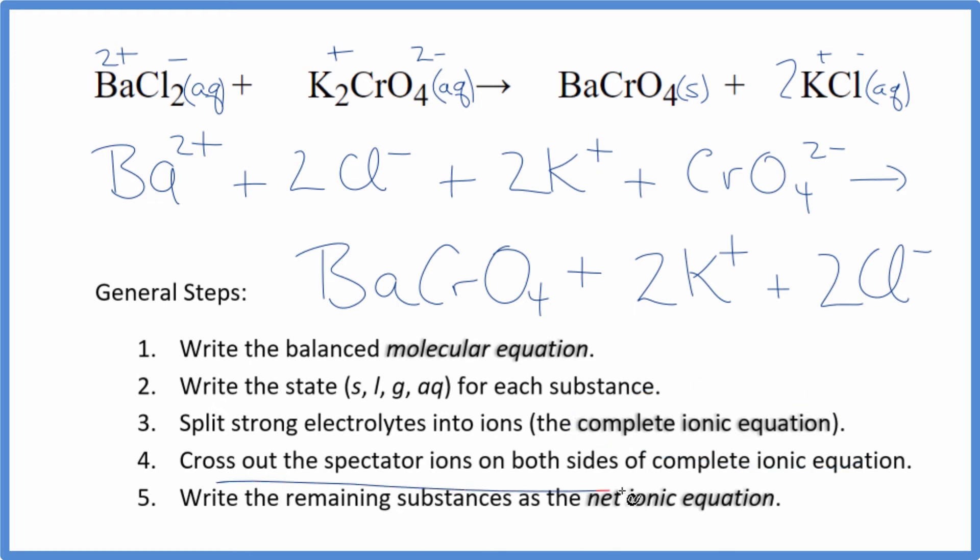Now we can cross out spectator ions. They're on both sides of the complete ionic equation. So in the reactants here, I have 2 chloride ions. In the products, 2 chloride ions. Those are spectator ions, we can cross those out. Reactants, 2 potassium ions. Products, 2 potassium ions. We can cross those out.